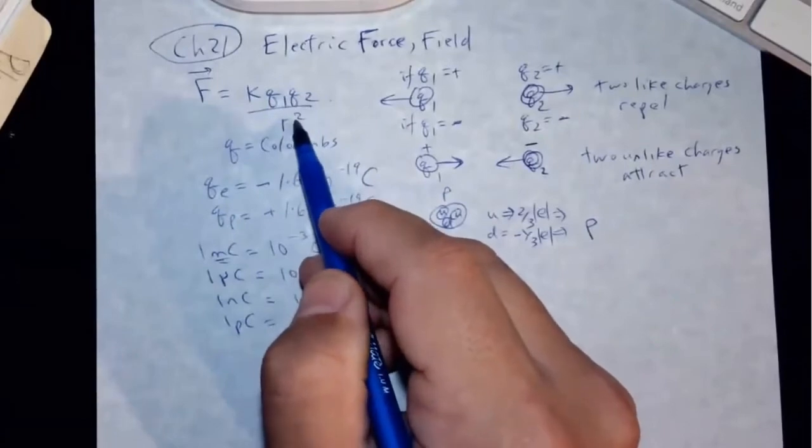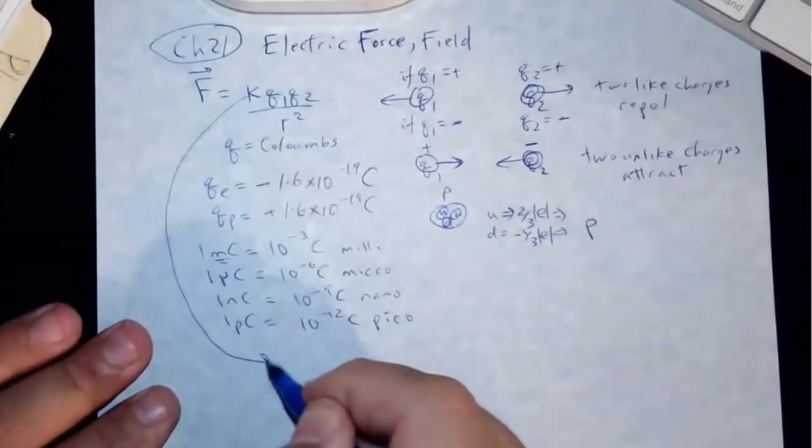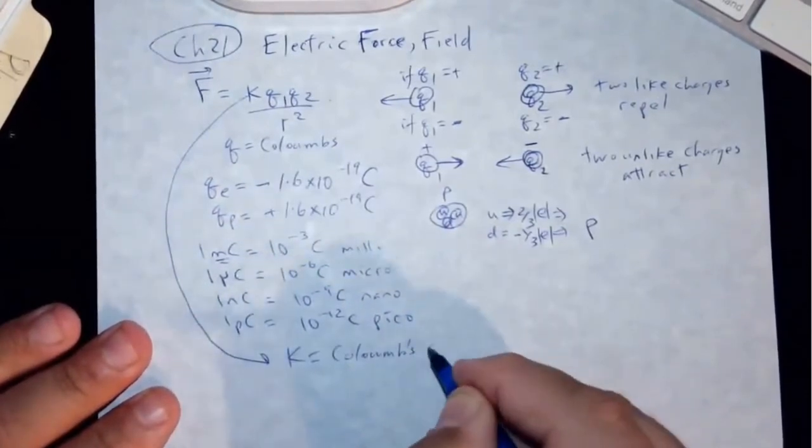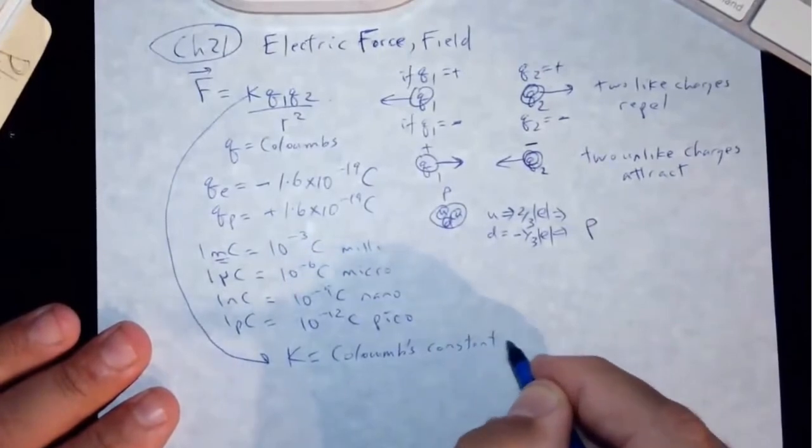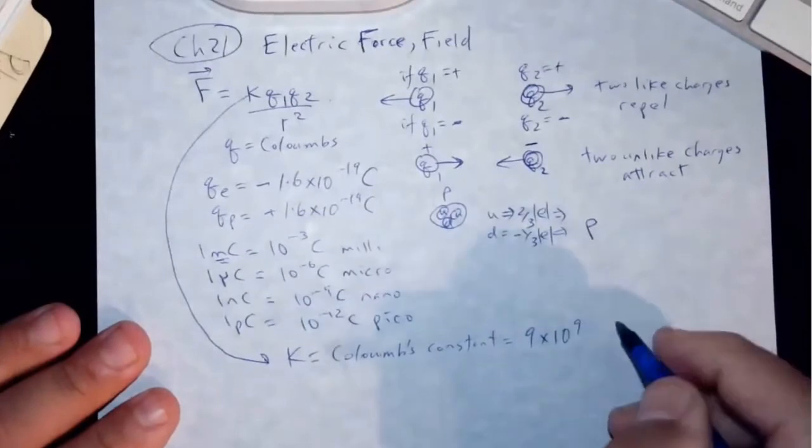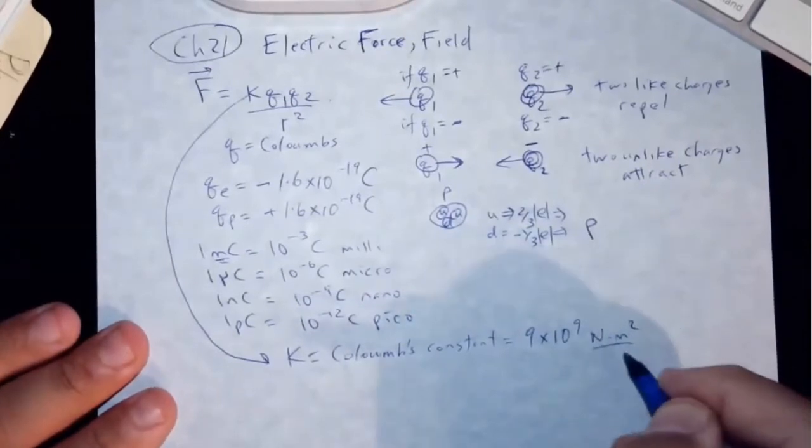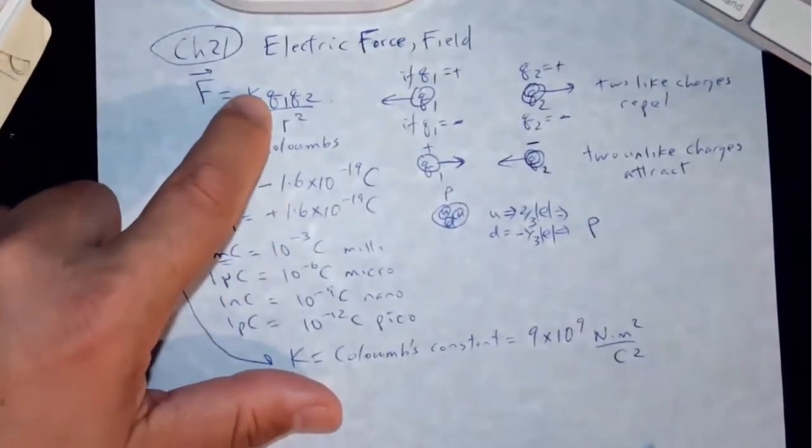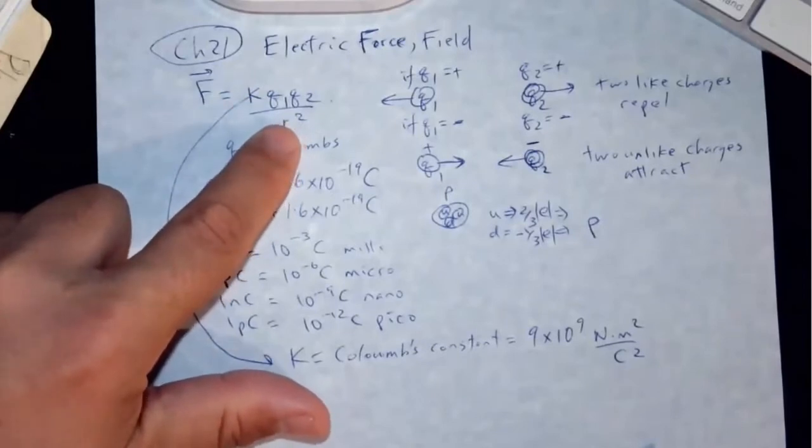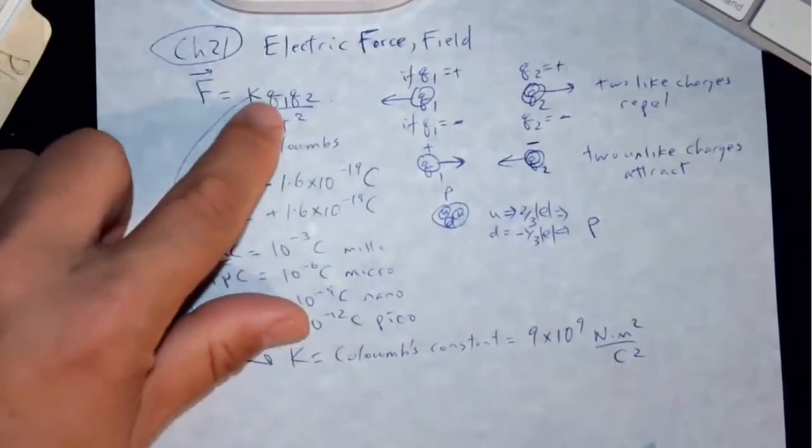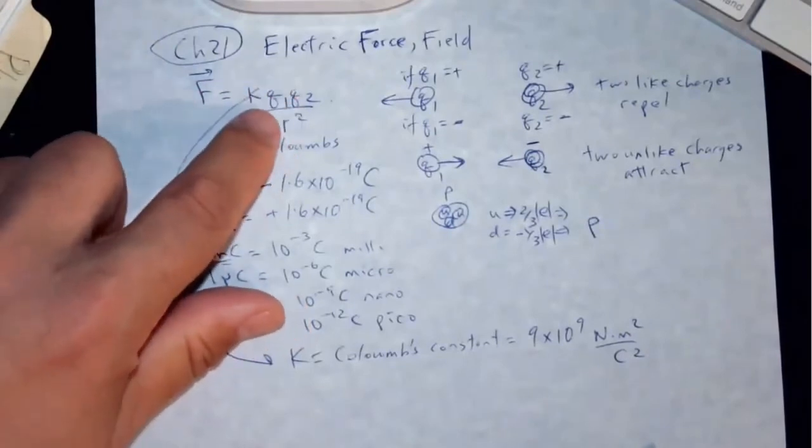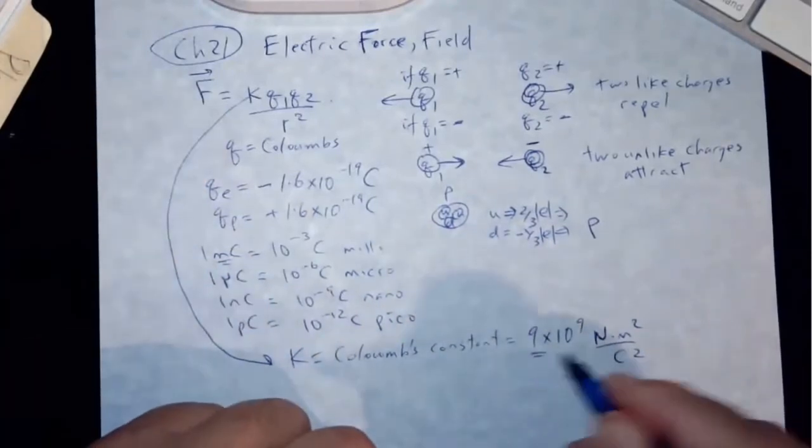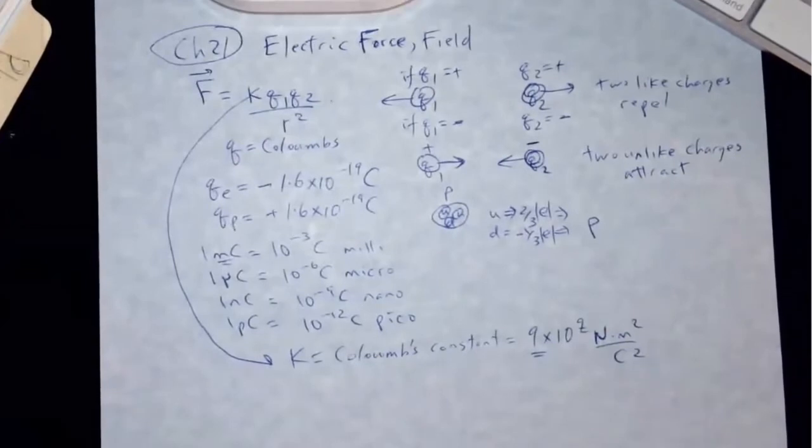So then this would be coulomb, coulomb, coulomb, and then this is meter squared. So the units of the k, k is Coulomb's constant. And then that would be nine times 10 to the ninth. It'd be newton meter squared over coulomb squared. So newton and then meter squared so that it can cancel the bottom meter squared. And then the coulomb squared down here can cancel the top coulomb squared so that the answer will come out in newtons. So it's an easy number to remember because both this and that are nine power.